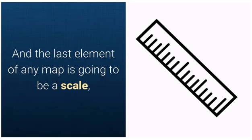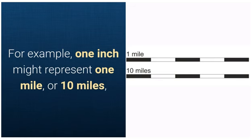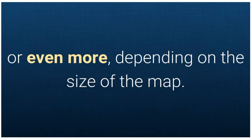And the last element of any map is going to be a scale. And the scale shows the relation between a certain distance on the map and the actual distance in real life. For example, 1 inch might represent 1 mile, or 10 miles, or even more, depending on the size of the map.